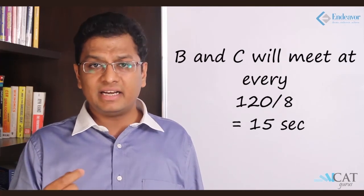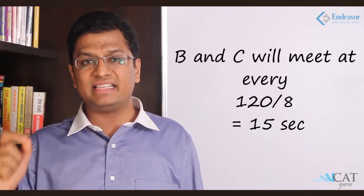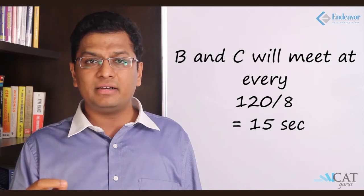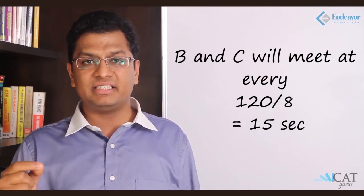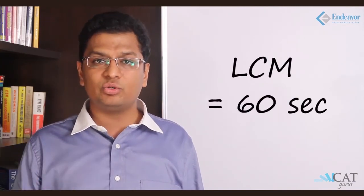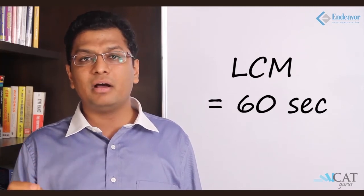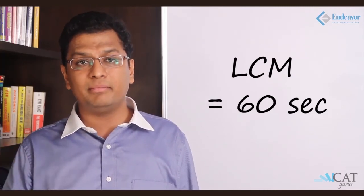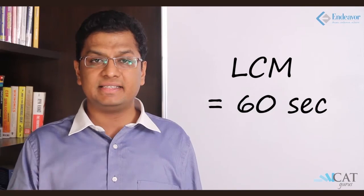B and C, their relative speed 7, 15 so it is 8 meter per second. So they meet at 120 divided by 8 which is every 15 seconds they meet. So A and B are meeting at 60 seconds. B and C are meeting at 15 seconds. So the LCM of these two will be the point where both of them are meeting or all three of them are meeting together which is 60 seconds.